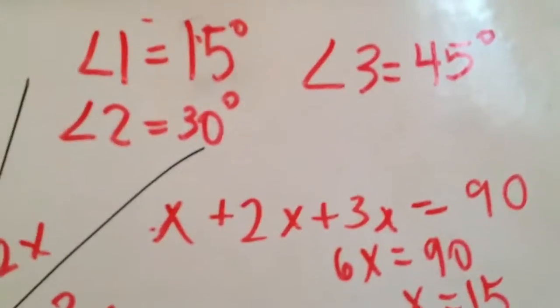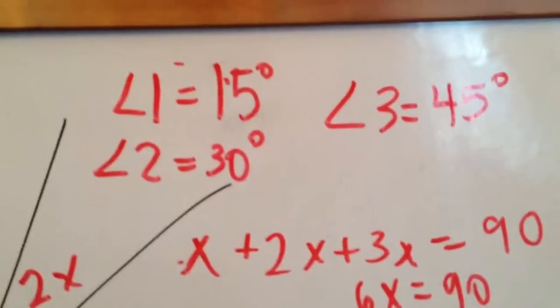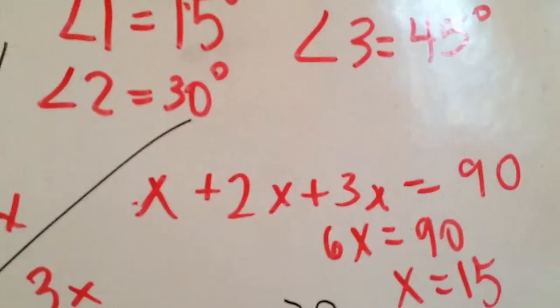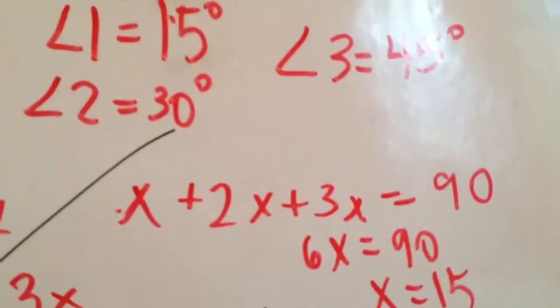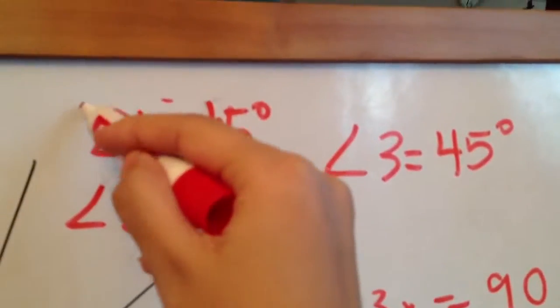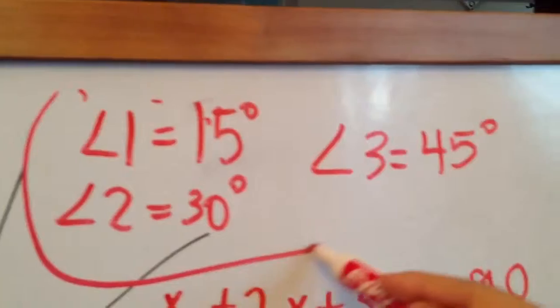And when you want to check your answer, you can add these 3 up and see if it adds up to 90 degrees. This does, since it's 75 plus 15, which equals 90. So that we know that this is our answer. Angle 1 equals 15 degrees, angle 2 equals 30 degrees, and angle 3 equals 45 degrees.